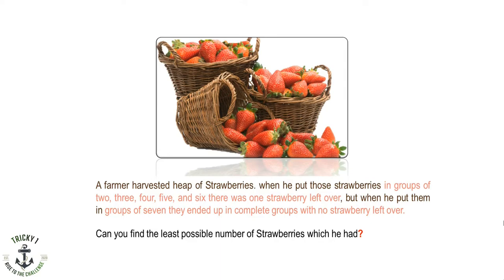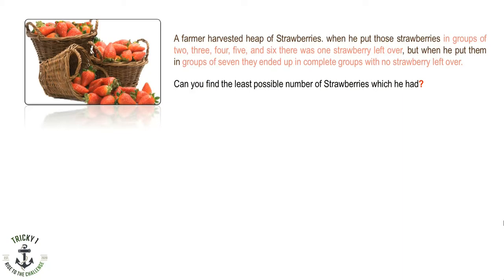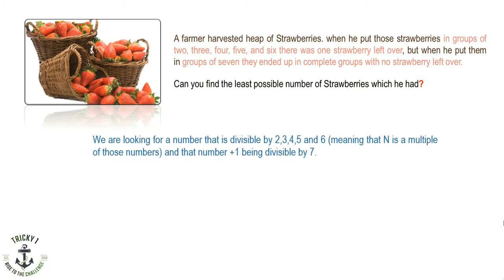Try to solve it by yourself first. Once you are ready, let's do it. We are looking for a number that is divisible by two, three, four, five, and six — meaning n is a multiple of those numbers — and that number plus one must be divisible by seven.